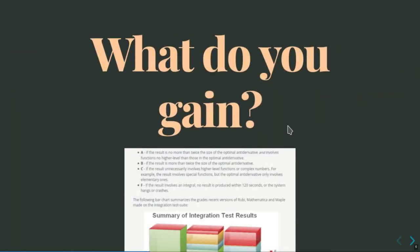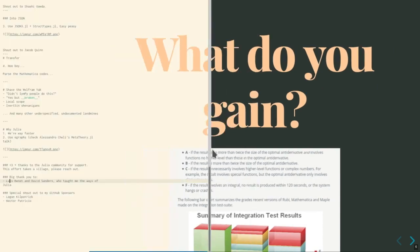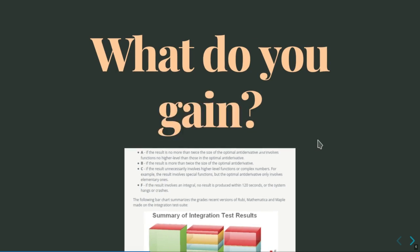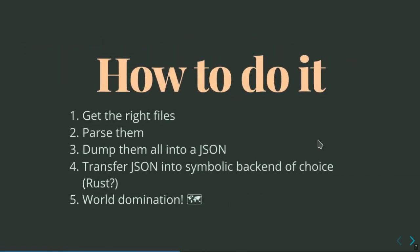So what do you actually gain from all of this? Ruben.jl has about 99% coverage over about 72,000 test cases, whereas Mathematica only has about 72% coverage, and Maple is at around half of that. Ruben.jl is also about 10 times faster than Mathematica for many of those, and there's an entire grading system. The point is: it's faster, it has more coverage, and we really want to do it.